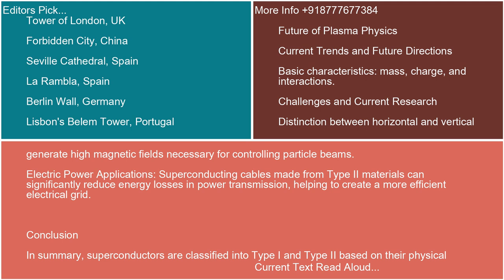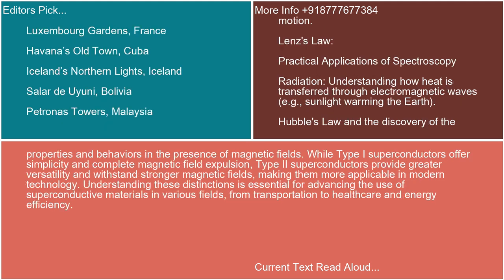Conclusion and summary: superconductors are classified into Type I and Type II based on their physical properties and behaviors in the presence of magnetic fields. While Type I superconductors offer simplicity and complete magnetic field expulsion, Type II superconductors provide greater versatility and withstand stronger magnetic fields, making them more applicable in modern technology. Understanding these distinctions is essential for advancing the use of superconductive materials in various fields, from transportation to healthcare and energy efficiency.